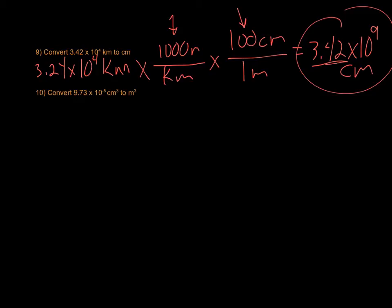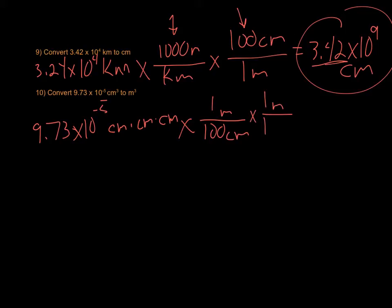And then the bottom one, we're going from cubic centimeters to cubic meters. It's 9.73 times 10 to the negative fifth cubic centimeters. I'm going to write that as centimeters times centimeters times centimeters. That's what cubes means. So all I have to do to convert that is make the centimeters to meters conversion three times. 1 meter, 100 centimeters. Do that one more time to cancel out the cubic centimeters.